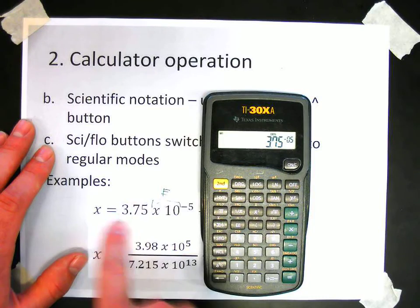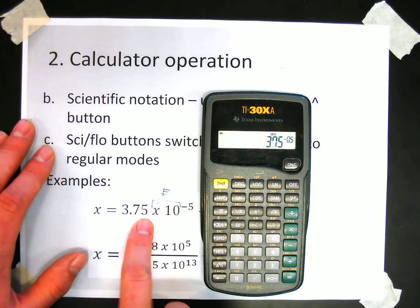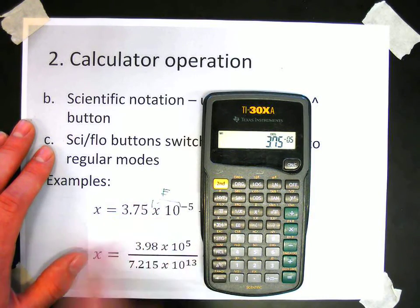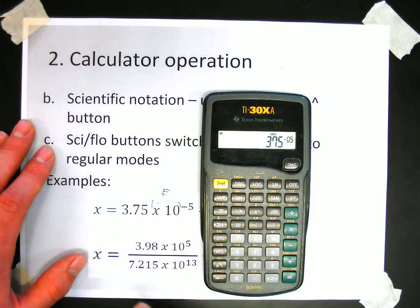So for instance, I wouldn't want to type in 3.75 times 10 E negative 5. Because now I put the 10 in twice. The E button includes the 10.